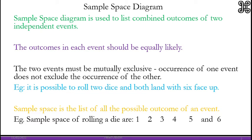Sample space is the list of all the possible outcomes of an event. For example, sample space of rolling a die are 1, 2, 3, 4, 5 and 6.